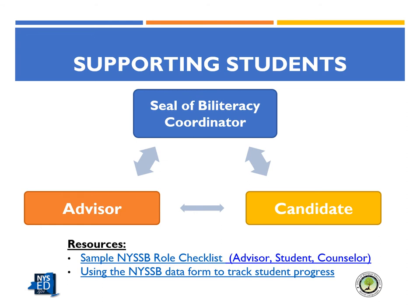The Seal of Biliteracy coordinator facilitates the entire process and ensures each person fulfills their role. At the beginning of the year, the coordinator creates a plan for how the student will earn three points in English and three points in another world language. He or she gathers biographical information on the student which will be tracked along with the student's progress and submitted on the end-of-year data form.